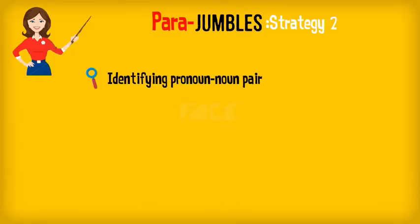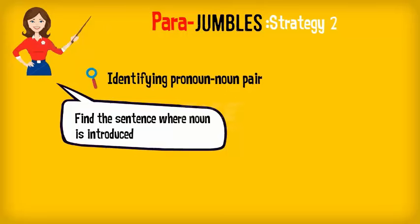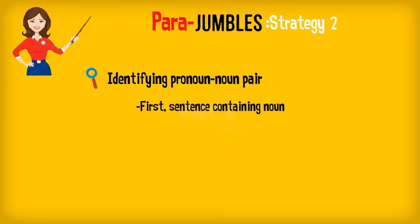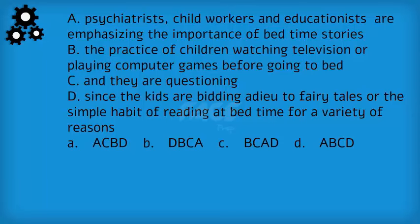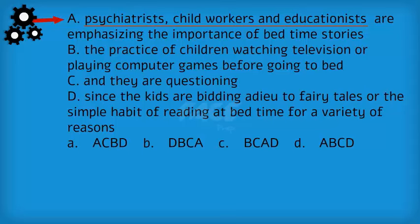The second method is looking for the pronoun-noun pair. Whenever you see sentences containing pronouns like 'he,' 'she,' 'it,' 'they,' etc., identify the sentence where the noun is introduced. The sentence containing the noun will come first, and the sentence containing the pronoun will come after it. For example, in this para-jumble, sentence C has a pronoun 'they,' which means a plural subject should come before sentence C. That plural subject is found in sentence A: psychiatrists, child workers, and educationists. Thus, we can establish an AC link, and since there is only one option with an AC link, the answer is option A.